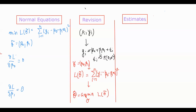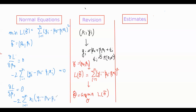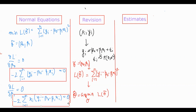From dL/d(beta0) = 0, differentiating the squared term brings down a factor of minus 2, giving: minus 2 * summation_{i=1}^{n} (y_i minus beta0 minus beta1 x_i) = 0. Similarly, from dL/d(beta1) = 0 we get: minus 2 * summation_{i=1}^{n} x_i * (y_i minus beta0 minus beta1 x_i) = 0. These two are called the normal equations.